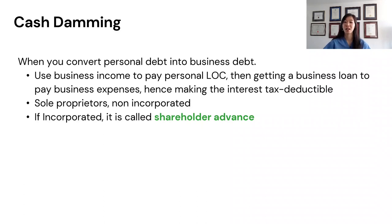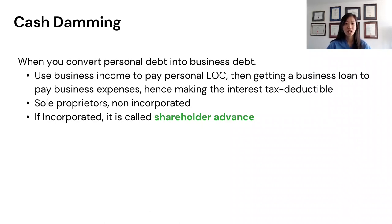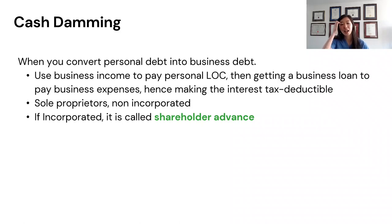For the sake of completeness, I want to briefly touch on cash damming, which I've heard recommended by some accountants and staff physicians to new grads. Cash damming is when you convert your personal debt into business debt as a sole proprietor. You use your business income to pay down the line of credit, then obtain a business loan to pay off your business expenses, making those interest payments tax-deductible. As a personal line of credit, you don't get that tax deduction. If you're incorporated, the similar concept is known as shareholder advances. Be sure to speak with your financial advisor or accountant to see if these strategies work for you.